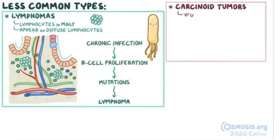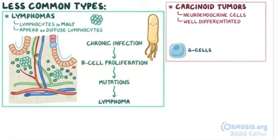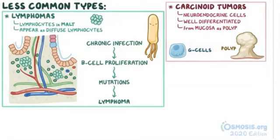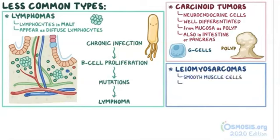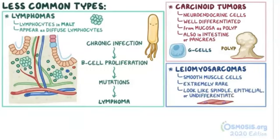Carcinoid tumor arises in neuroendocrine cells like the G cells of the stomach. It's a well-differentiated tumor that usually appears as a protruding mass from the mucosa, called a polyp. Although it mainly appears in the stomach, it can also arise in other parts of the digestive tract, like the intestine or the pancreas, which also have G cells. Finally, leiomyosarcoma arises from smooth muscle cells from the gastric wall, and it's extremely rare. Under the microscope, cancerous cells can look like spindle, epithelial, or undifferentiated cells.